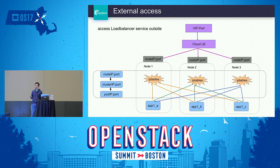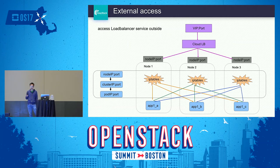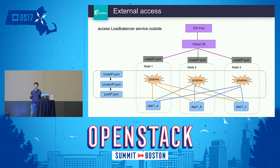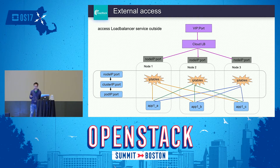This is external access. Here is an example of how to access a Kubernetes service externally. The service is of load balancer type. First, you need the VIP and port of the cloud load balancer. It will load balance to one of the nodes. Within a node, the node IP and port redirect to the cluster IP and port, and then the cluster IP redirects to the pod IP and port — twice through iptables rules.